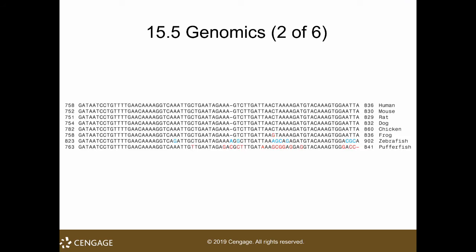Here is an example of a DNA segment being compared across species — this is part of genomics. The same gene is compared across human, mouse, rat, dog, chicken, frog, zebrafish, and pufferfish. The colored letters show differences between the gene sequences. You can see that human, mouse, rat, dog, and chicken are very similar — specifically, the human and mouse genes are highly similar.